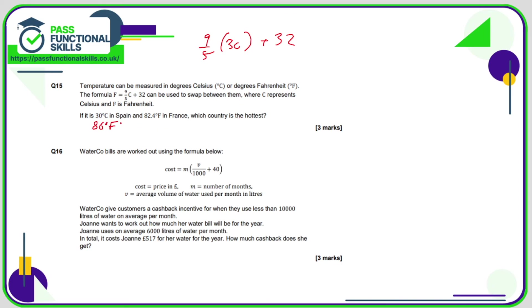Question number 16 looks quite confusing—there's a lot of numbers here—but v is the average volume of water, which we're told is 6000. So it's 6000 divided by 1000 plus 40, and then once we've worked that out we're multiplying it by m, which is the number of months. Here the number of months is 12 because we've been asked about the cash back in a year, and obviously there are 12 months in a year. 6000 divided by 1000 is 6, 6 plus 40 is 46, so the final calculation is 12 multiplied by 46, and that comes to a total of 552. Therefore her cash back is going to be 552 minus the 517, and that comes to a total of £35 cash back.